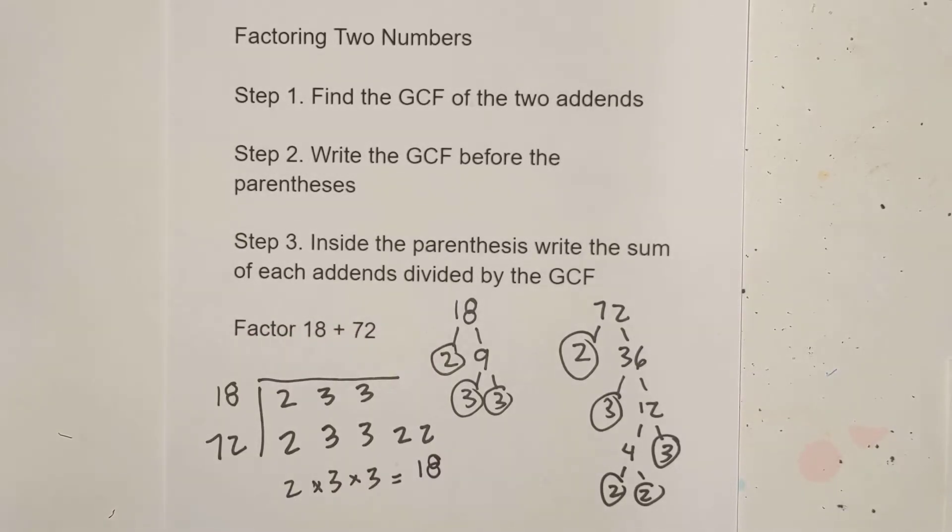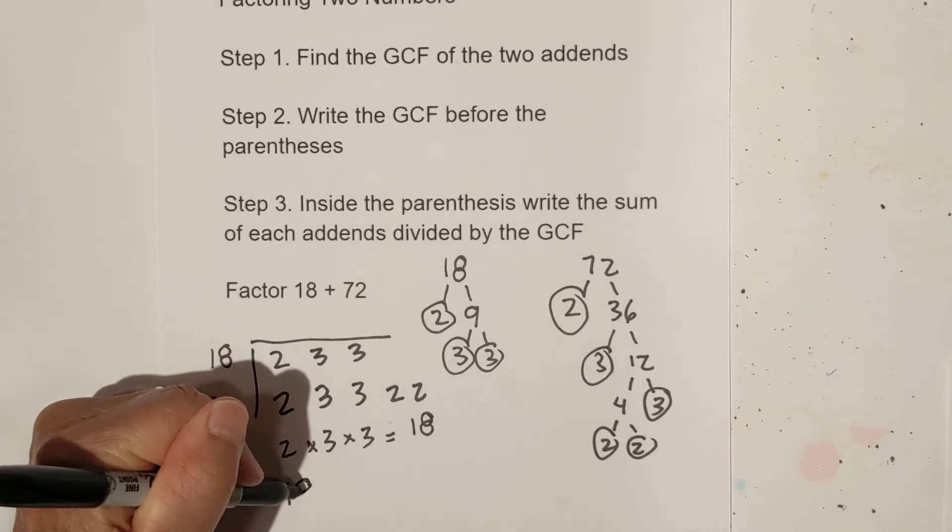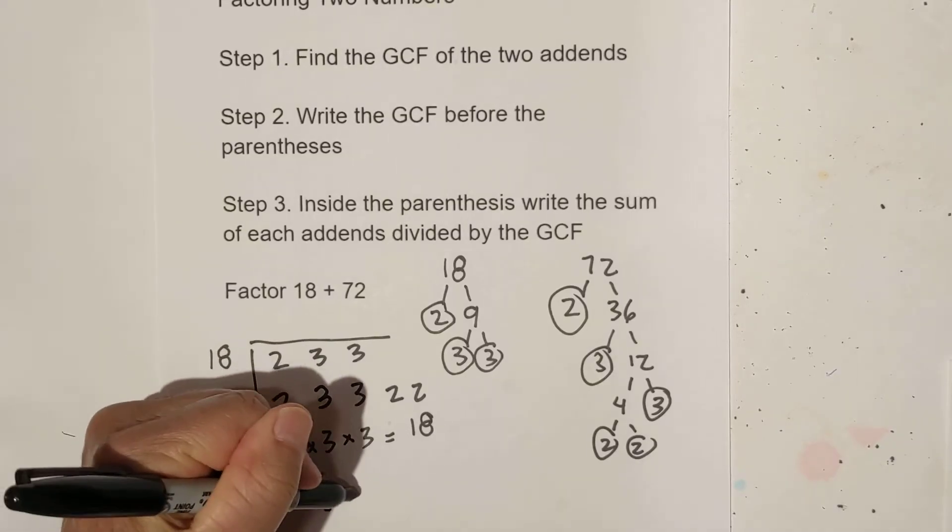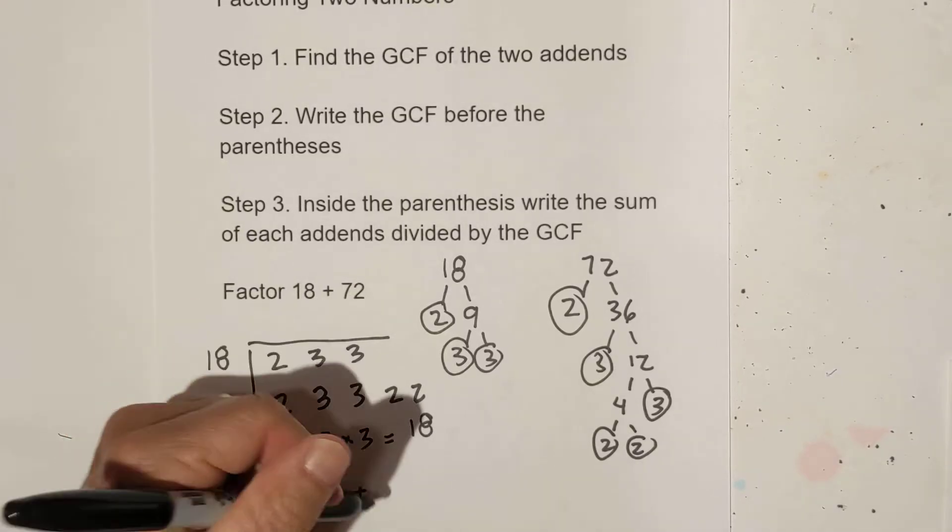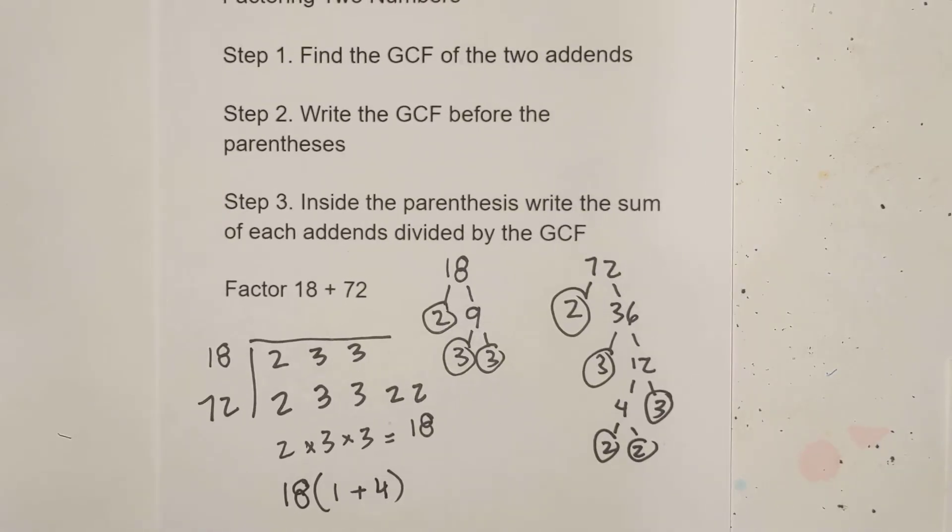So now we do the very same thing like we did on the first one. We'll put 18 on the outside of the parentheses. 18 divided by 18 is one. 72 divided by 18 is four. And we got the same answer. It just so happened the way we did it was we did it with a factor tree.